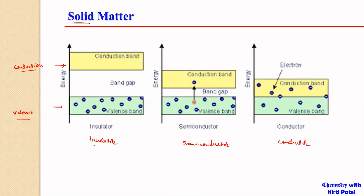In an insulator, the gap between the valency band and conduction band is very large — more than 10 electron volts. Because of this large gap, at room temperature electrons cannot be shifted to the conduction band, and as there are no electrons in the conduction band, electricity does not flow through these materials. Hence they are called insulators because they insulate against electrical shocks.